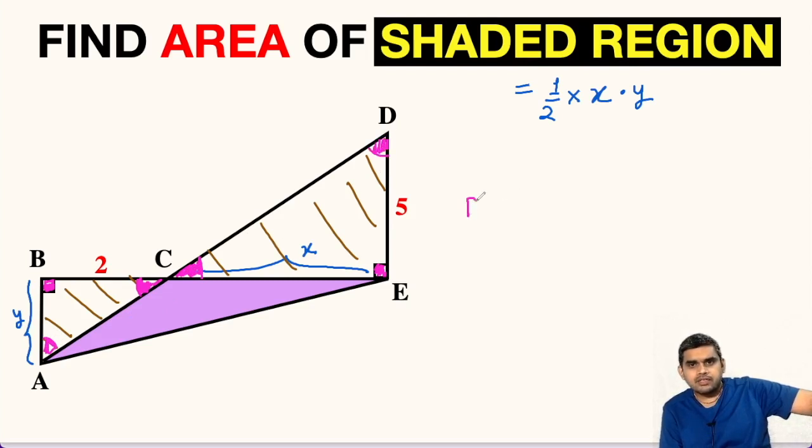So in short, by angle-angle-angle similarity, we can say that these two triangles are similar. That means triangle ABC is similar to triangle DEC.